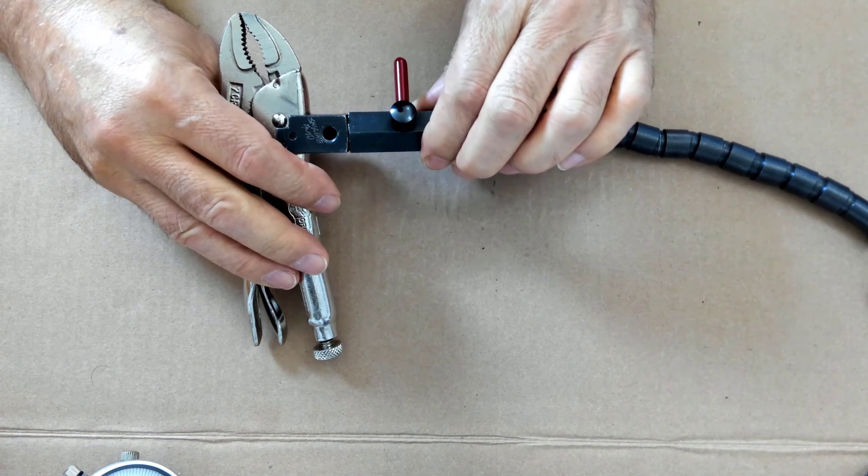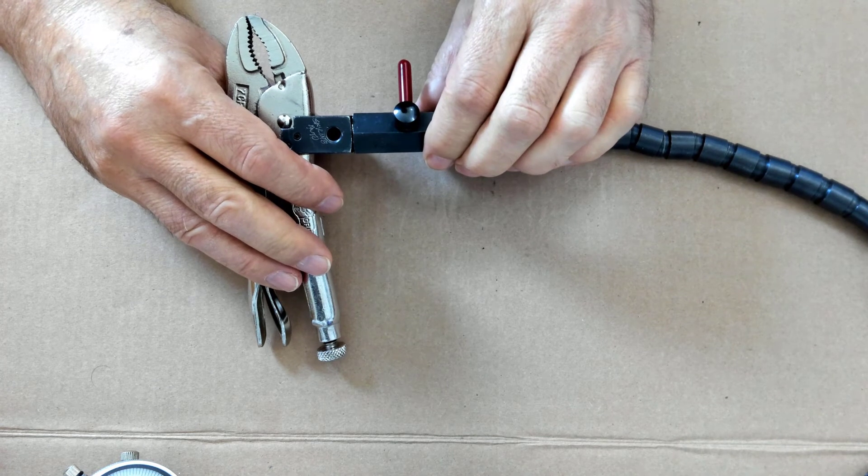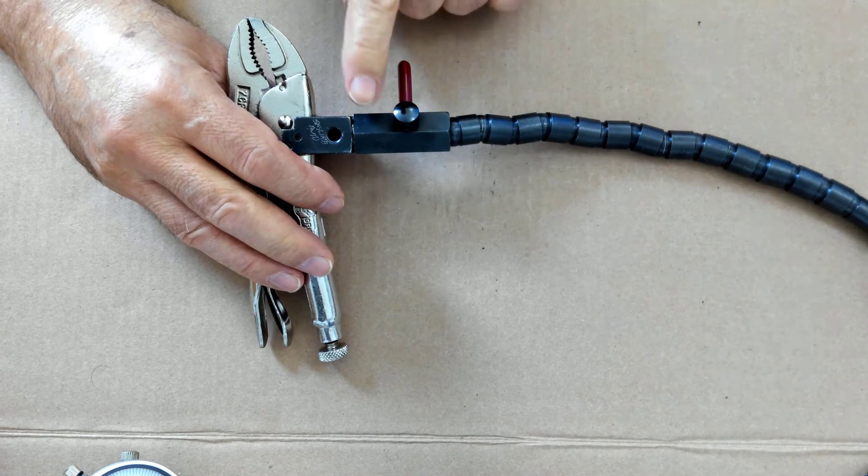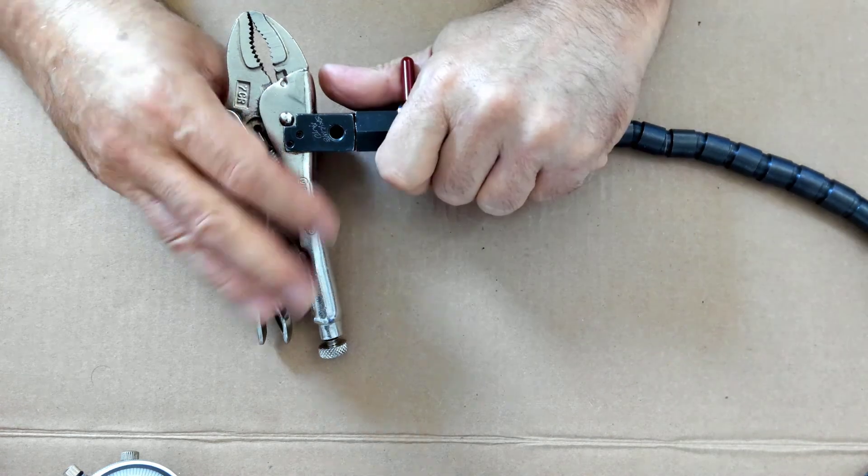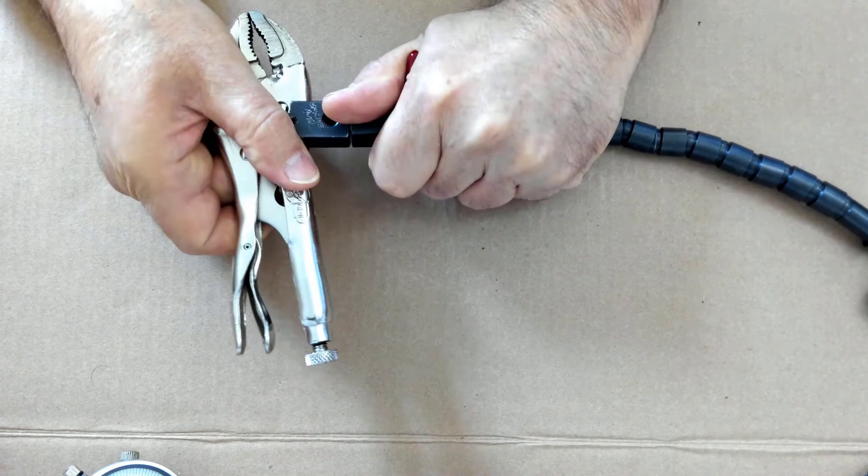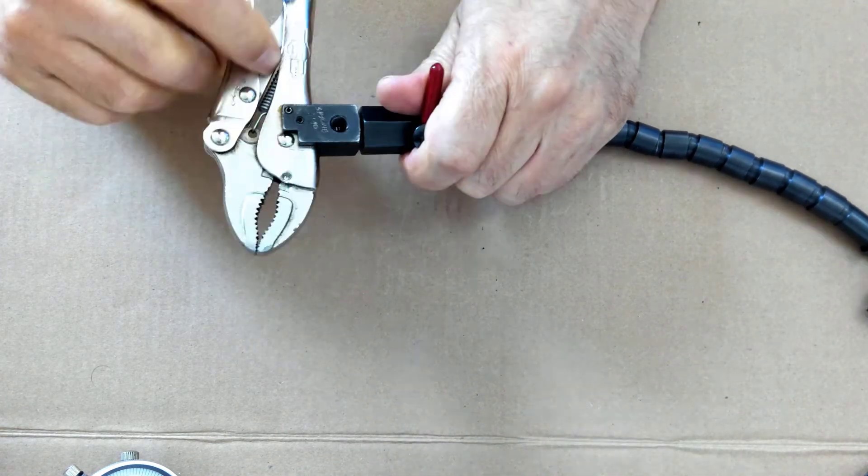Now they won't come loose very easily, but they won't be on so tight that you're going to need a wrench to take them apart. Just use the lever once again as leverage to loosen the two objects together to separate it.